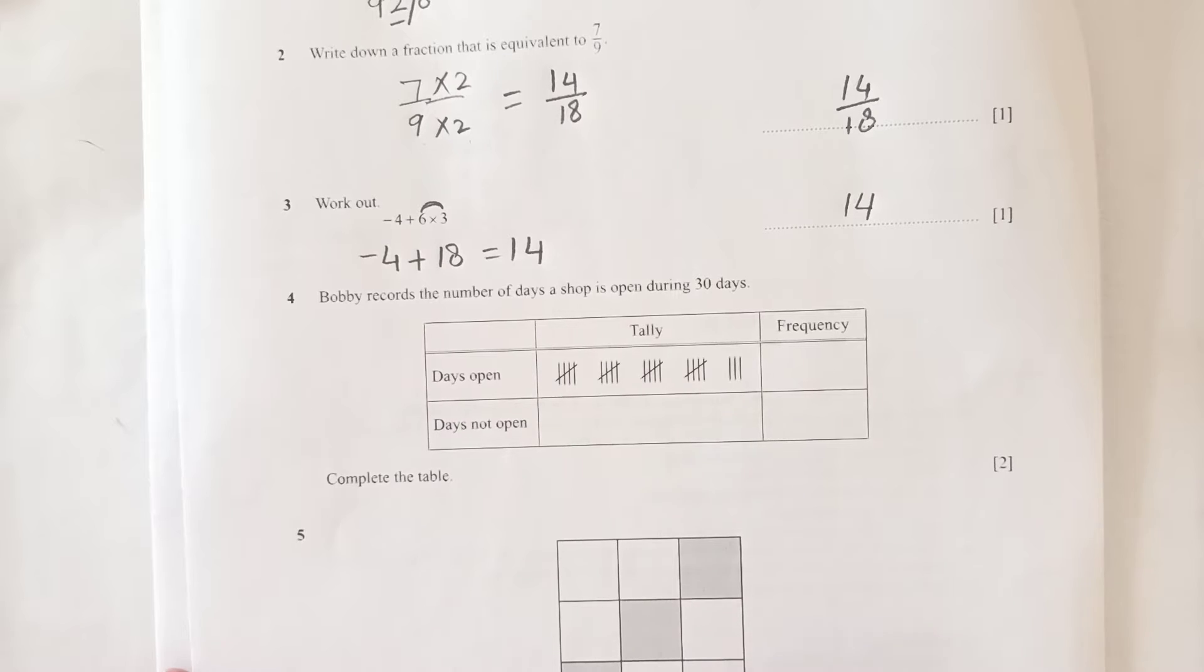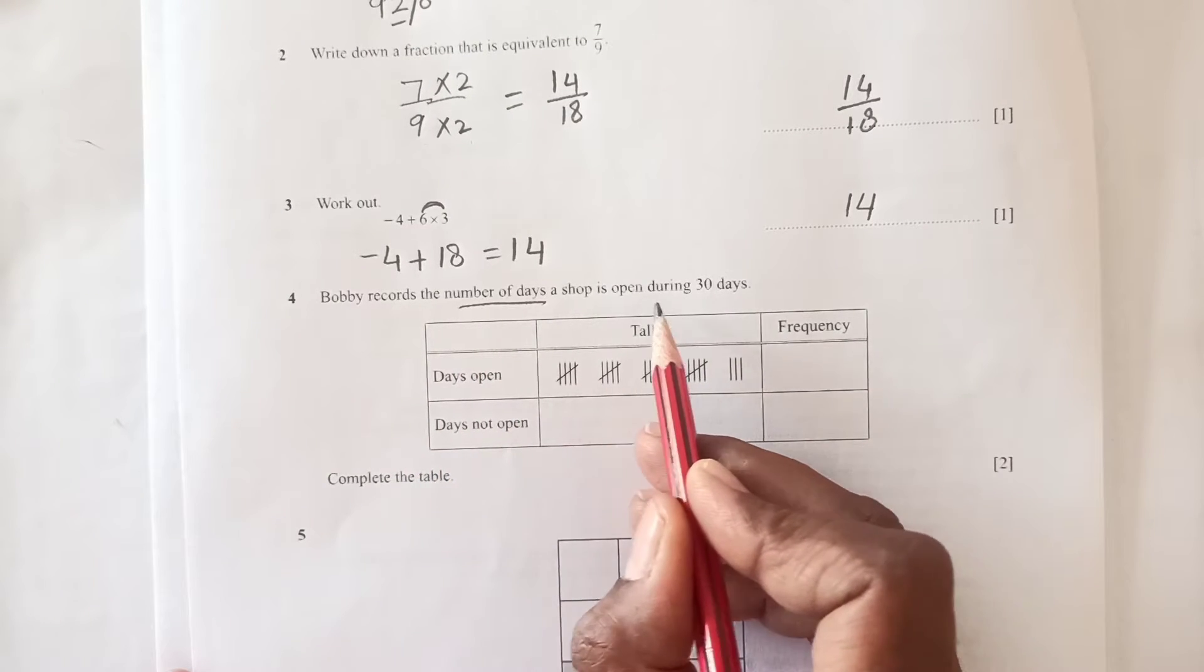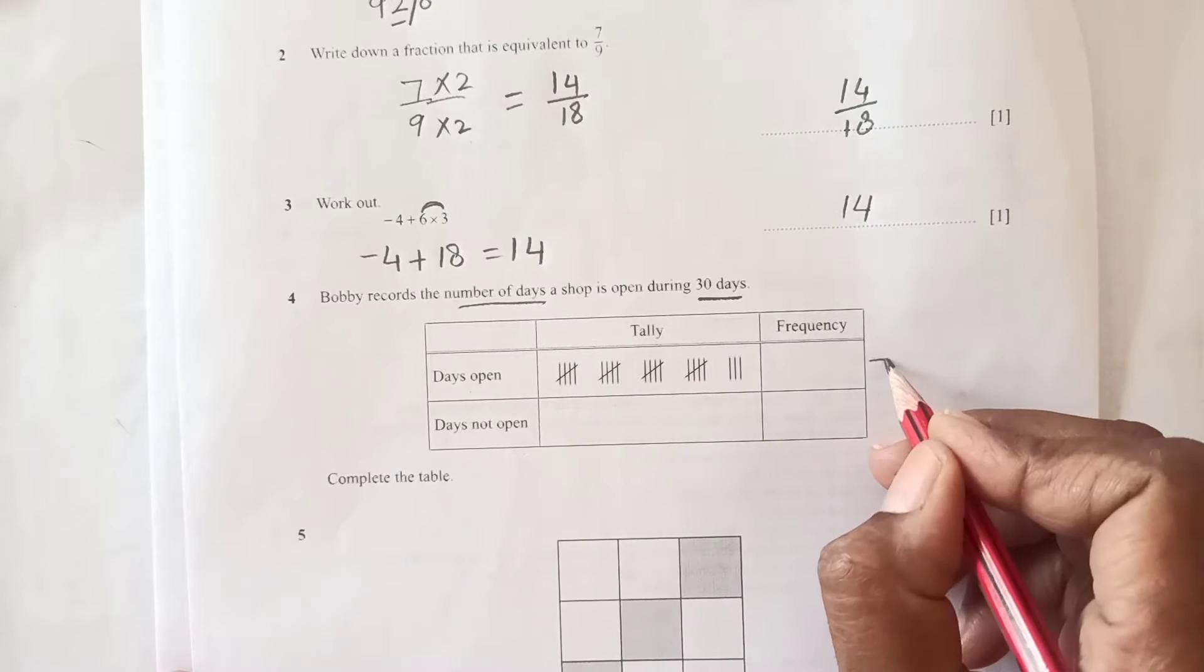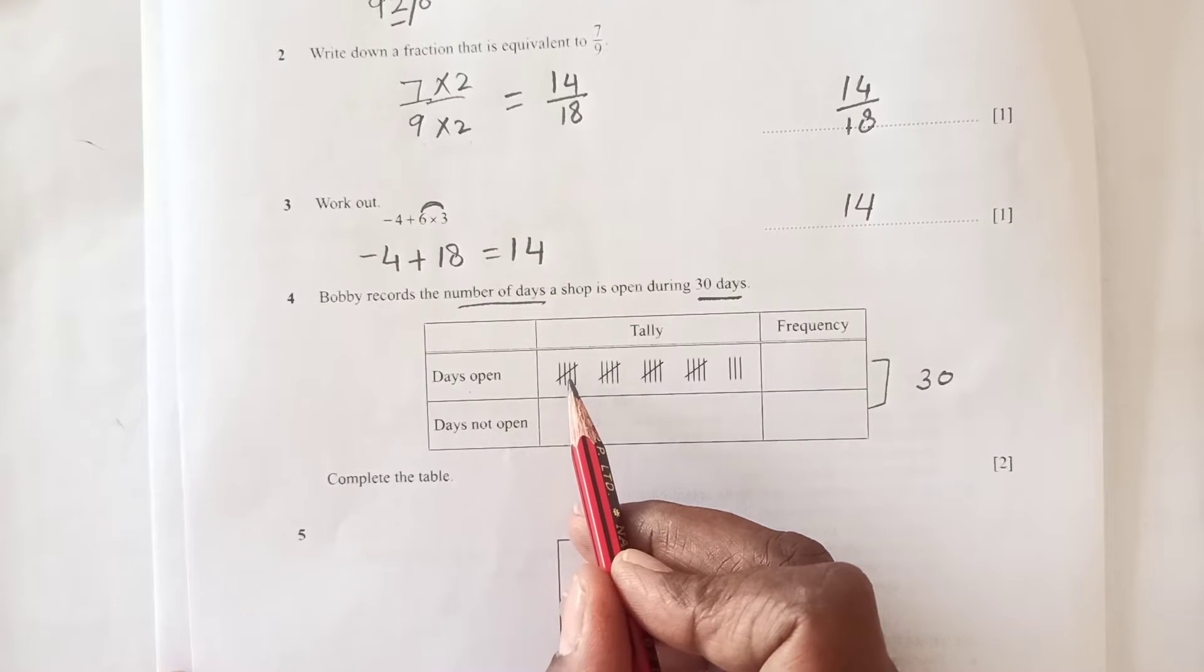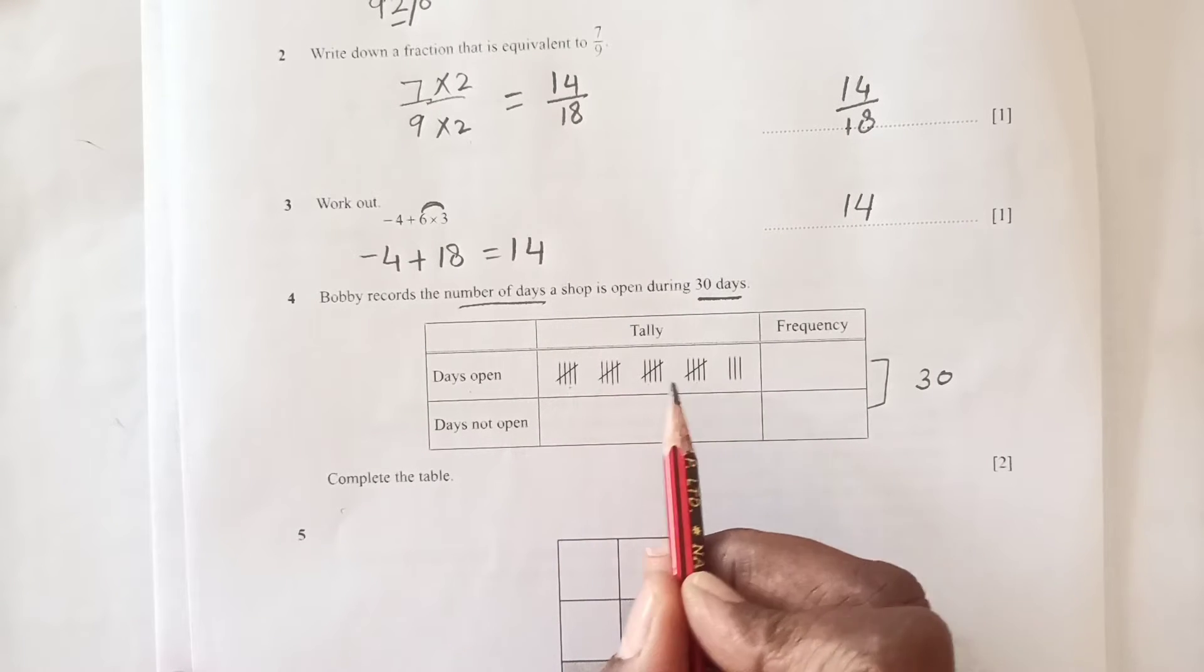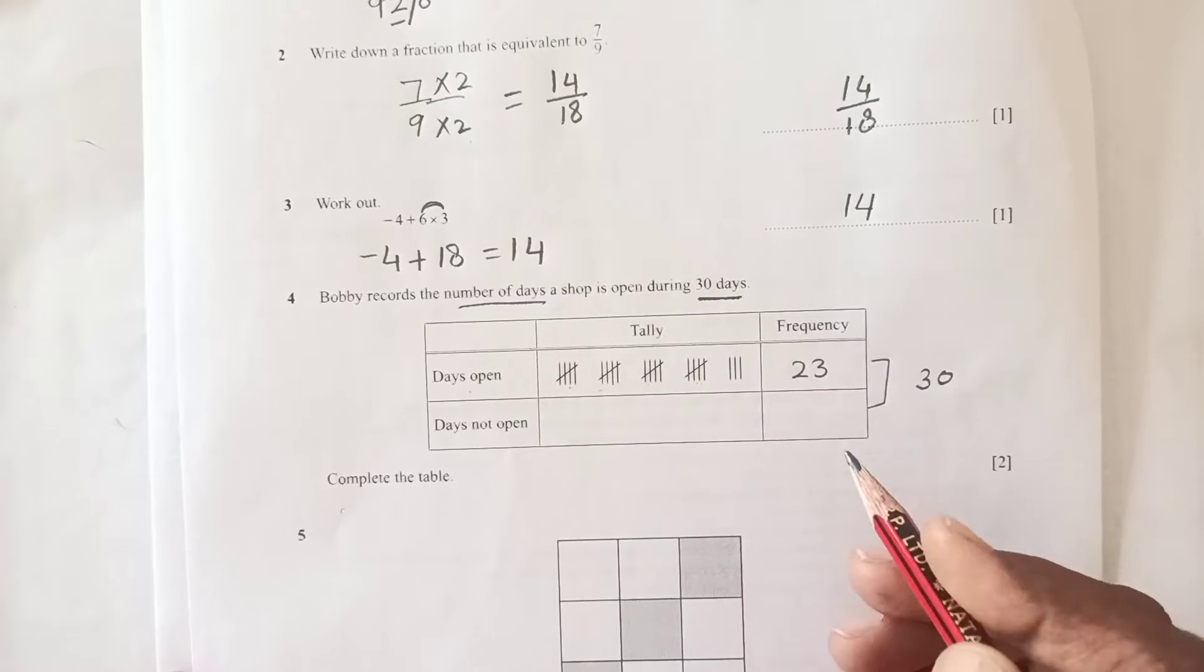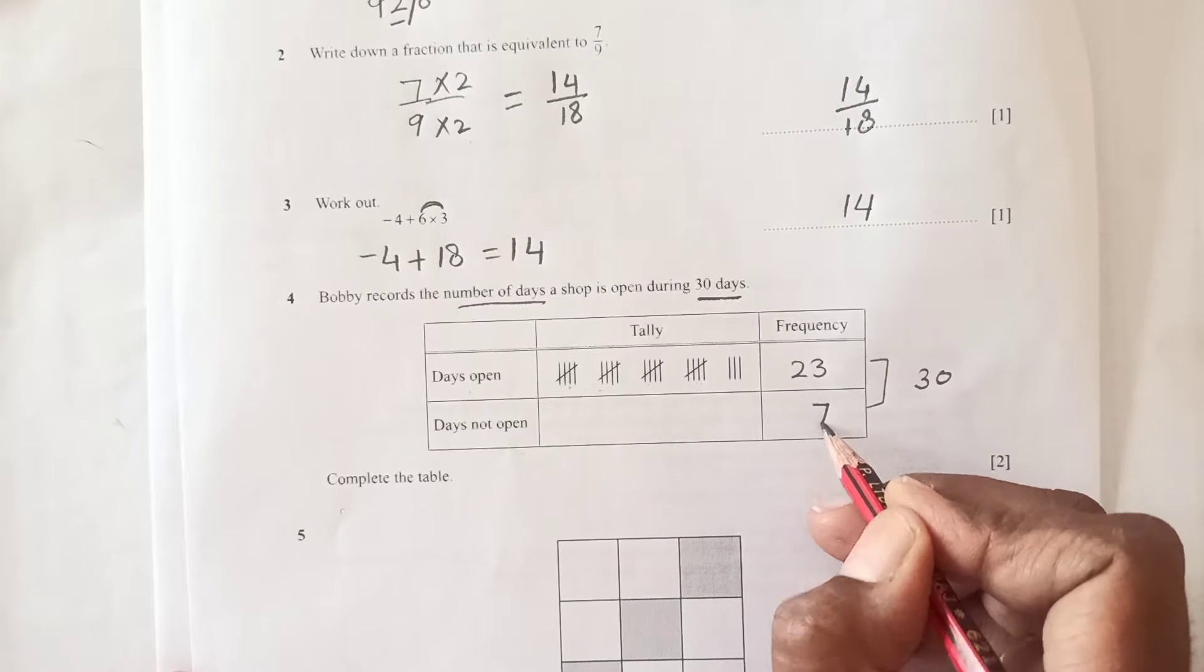Number 4: Bobby records the number of days a shop opens during 30 days. We need to complete this table. 5 times 4 is 20, 20 plus 3 is 23. The total is 30, so here it should be 7. For 7, we need to complete this: 1, 2, 3, 4, 5, 6, and 7.